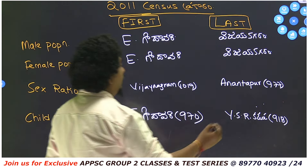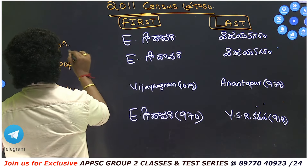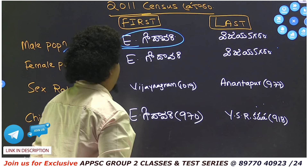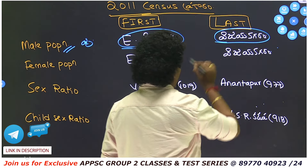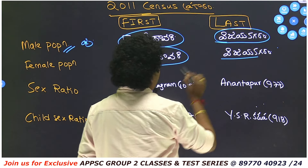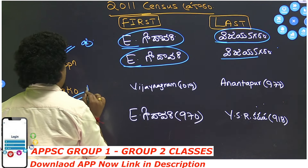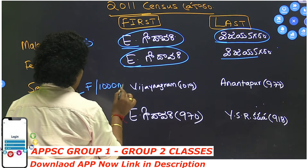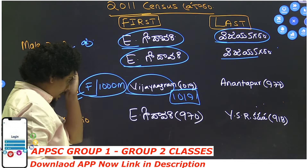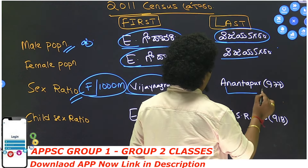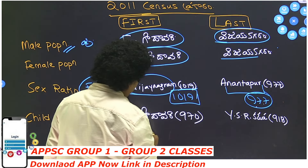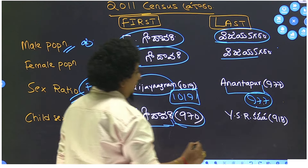Looking at district-wise data: Vijayanagara has the highest male population and the lowest female population. East Godavari has the lowest sex ratio among districts. For overall sex ratio, Vijayanagara ranks highest at 1,019, while Anantapur has the lowest sex ratio at 977. For child sex ratio, East Godavari is highest and Vijayanagara is lowest.